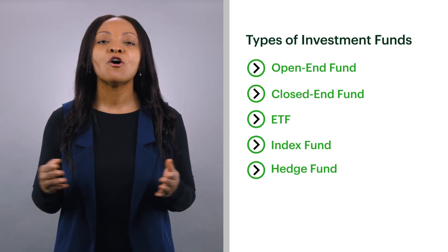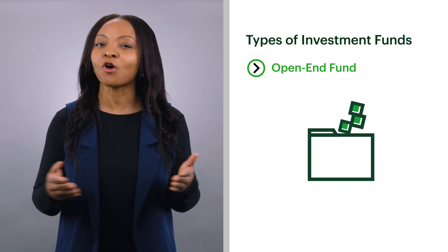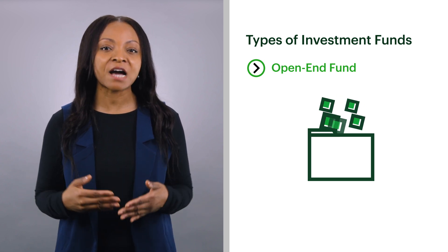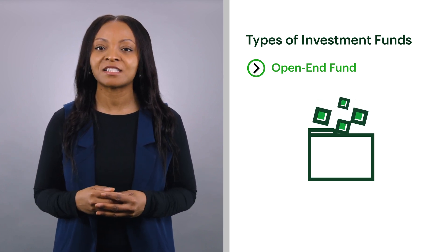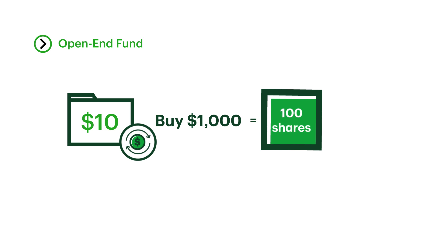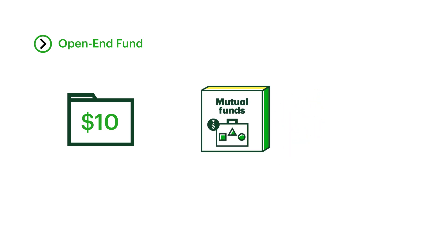There are many different types of investment funds. Open-end fund: the number of units in an open-end fund is always changing. The number of shares created is based on the NAV of the fund and the amount of money being invested. For example, if the NAV of a fund is ten dollars and an investor buys a thousand dollars worth of shares, then 100 new shares are created. But if an investor wants to sell their 100 shares, then the shares are redeemed by the fund and no longer exist.